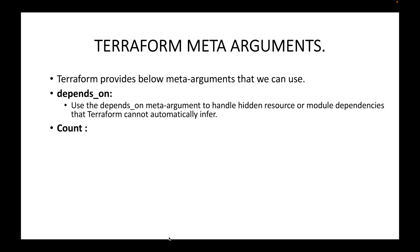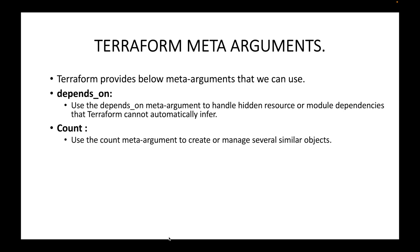Then we have the count meta argument. The count meta argument can be used to create or manage several similar objects. For example, if you want to launch 10 instances with the same configuration — same instance type, same AMI — then we can go with the count meta argument instead of having to write the resource block multiple times.